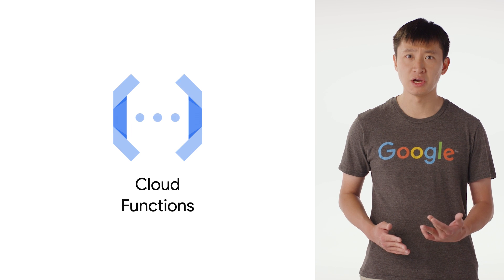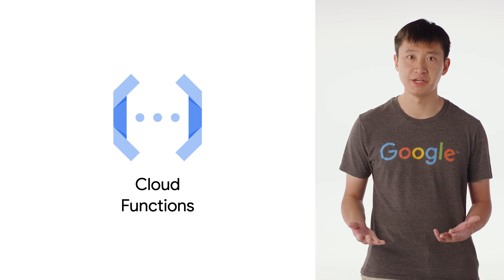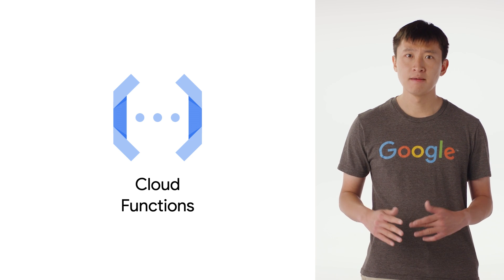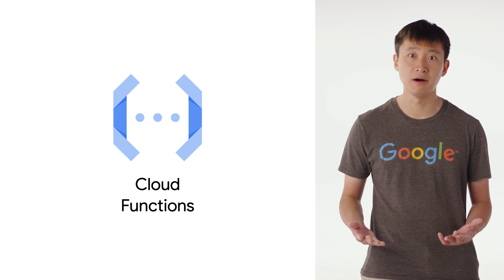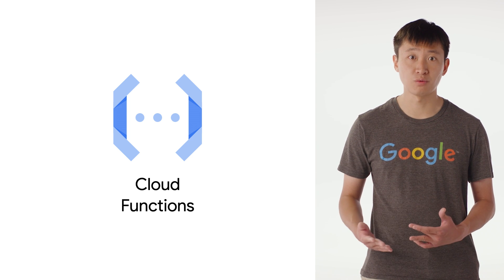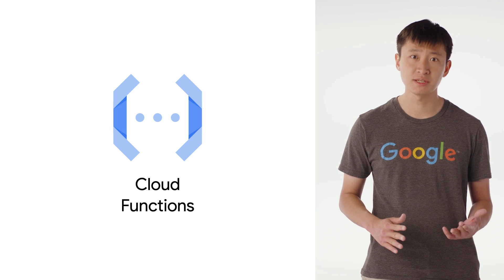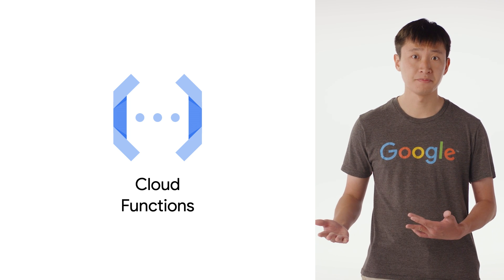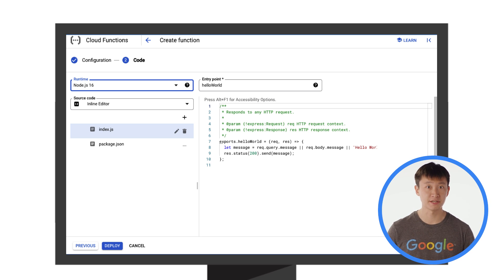But what if your application does need some back-end code, but you still want a highly managed solution? If so, you might want to check out Cloud Functions. Cloud Functions is designed for event-driven applications. For example, maybe you own an e-commerce business and want to automatically send a welcome email whenever a new user creates an account. With Cloud Functions, you can write code that runs in response to such events, and you can do this without having to manage servers, containers, or infrastructure. Using Cloud Functions is simple — all you do is write a function and deploy it to the cloud.